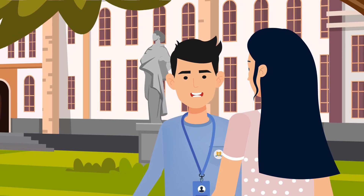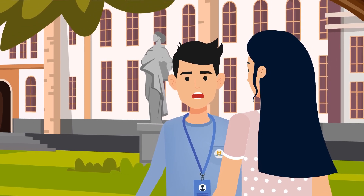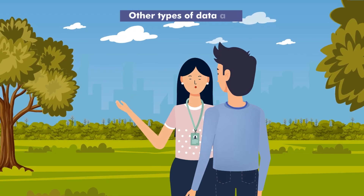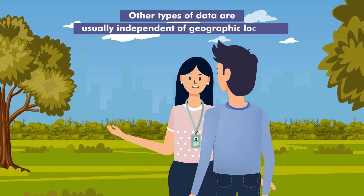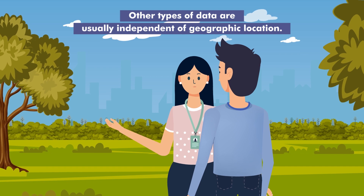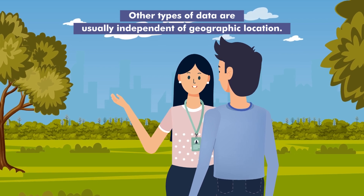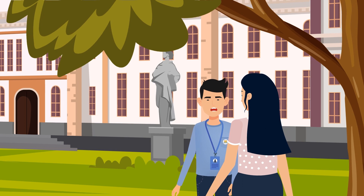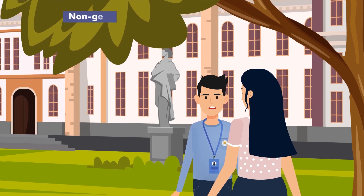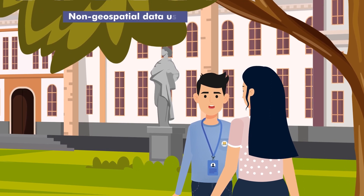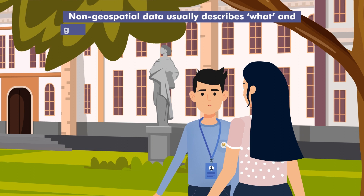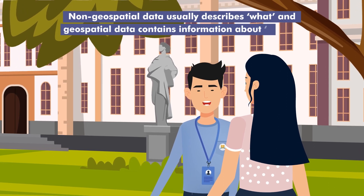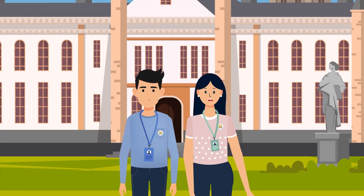But how is it any different from normal or non-geospatial data? Other types of data are usually independent of geographic location. For example, your height — it has nothing to do with any location. So, can I say that non-geospatial data usually describes what and geospatial data contains information about where? Exactly.